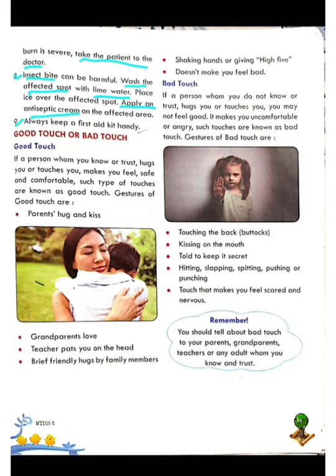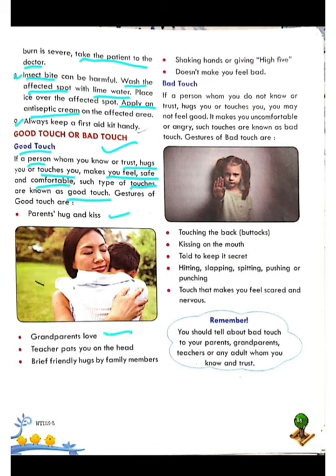Now we will learn about good touch and bad touch. Good touch: if a person whom you know or trust hugs or touches you and makes you feel safe and comfortable, such touches are known as good touch. Examples include parents hugging and kissing, grandparents' love, a teacher patting you on the head, brief friendly hugs by family members, or shaking hands. For example, when you win a medal and your principal pats you on the shoulder — that is good touch.